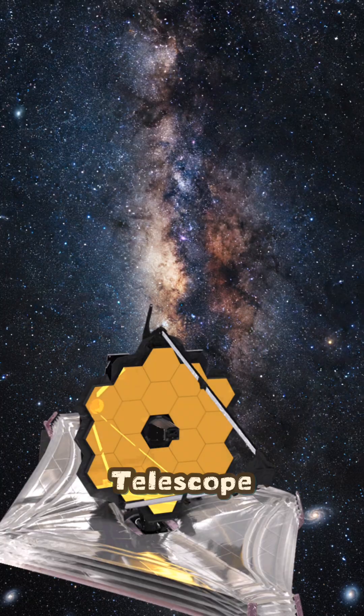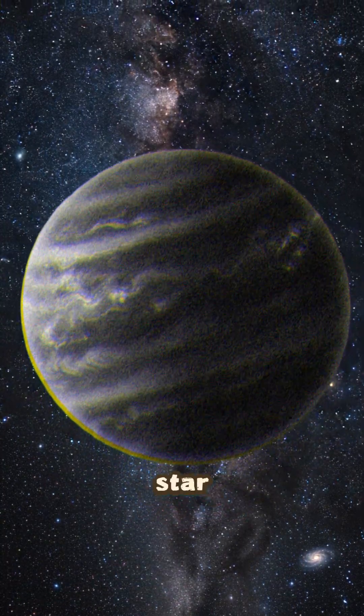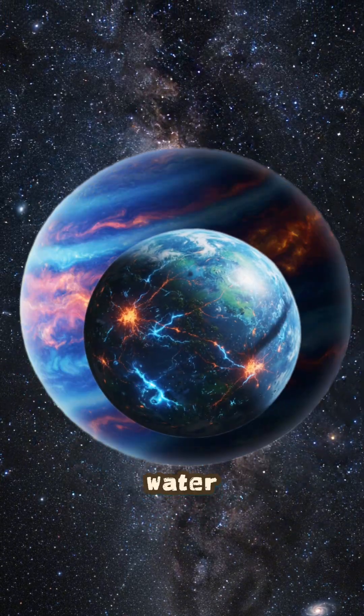Thanks to the James Webb telescope, we know about at least one potential planet that orbits this sun-sized star, and it could be a large gas giant just like in the movies that may host a moon with liquid water.